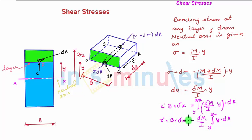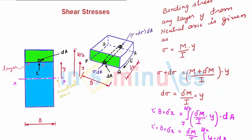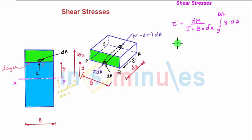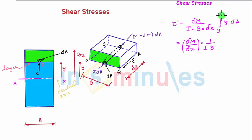Taking b times delta x to the right-hand side, we get tau dash = (delta M / delta x) times (1 / I·b) times the integral from y to d/2 of y dA. The integral of y dA from y to d/2 is actually the first moment of the shaded area about the neutral axis.